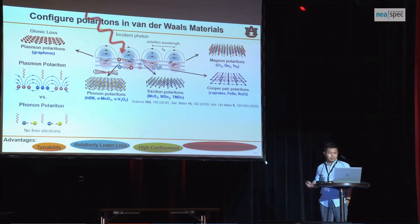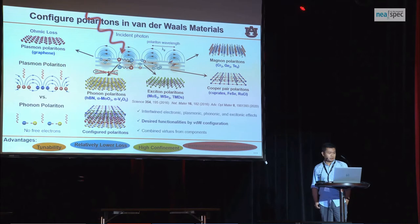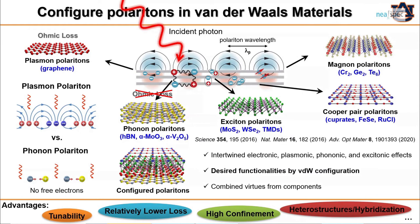I just want to add additional notes on polaritons in van der Waals materials. Not only do they have such advantages, but they could also be configured — meaning you could combine different van der Waals materials in heterostructures by stacking, twisting, or microstructuring to achieve configured polaritons with additional properties that do not exist in nature. I'm going to introduce several examples under this topic.